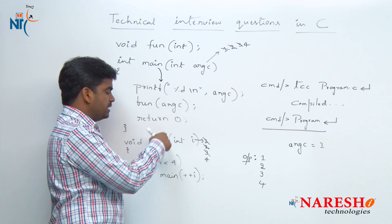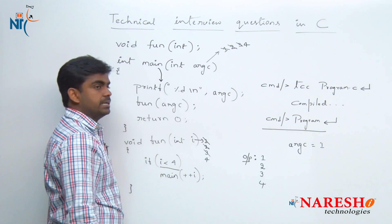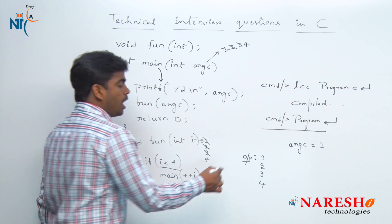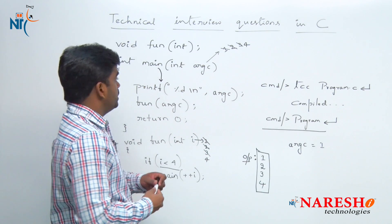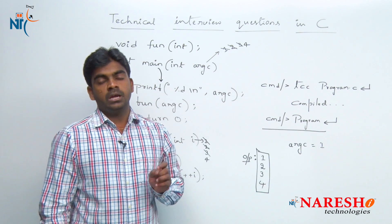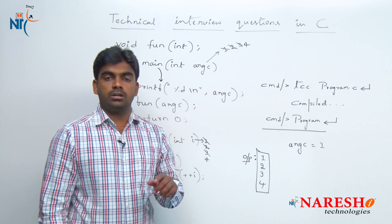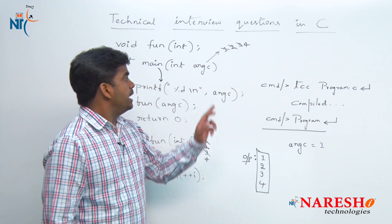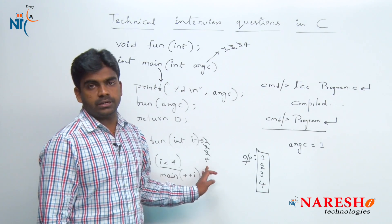Again fun method is called. When fun is called the i value is 4 — now observe: 4 is less than 4, the condition has failed. Then it will terminate and the control goes back and terminates. So the output of this program is 1, 2, 3, 4. And one more thing: argc is responsible for counting how many arguments you are passing at the command line. If you are not passing any command line argument, it still contains one argument — the program name — which is considered as the first argument. So it starts working with 1.